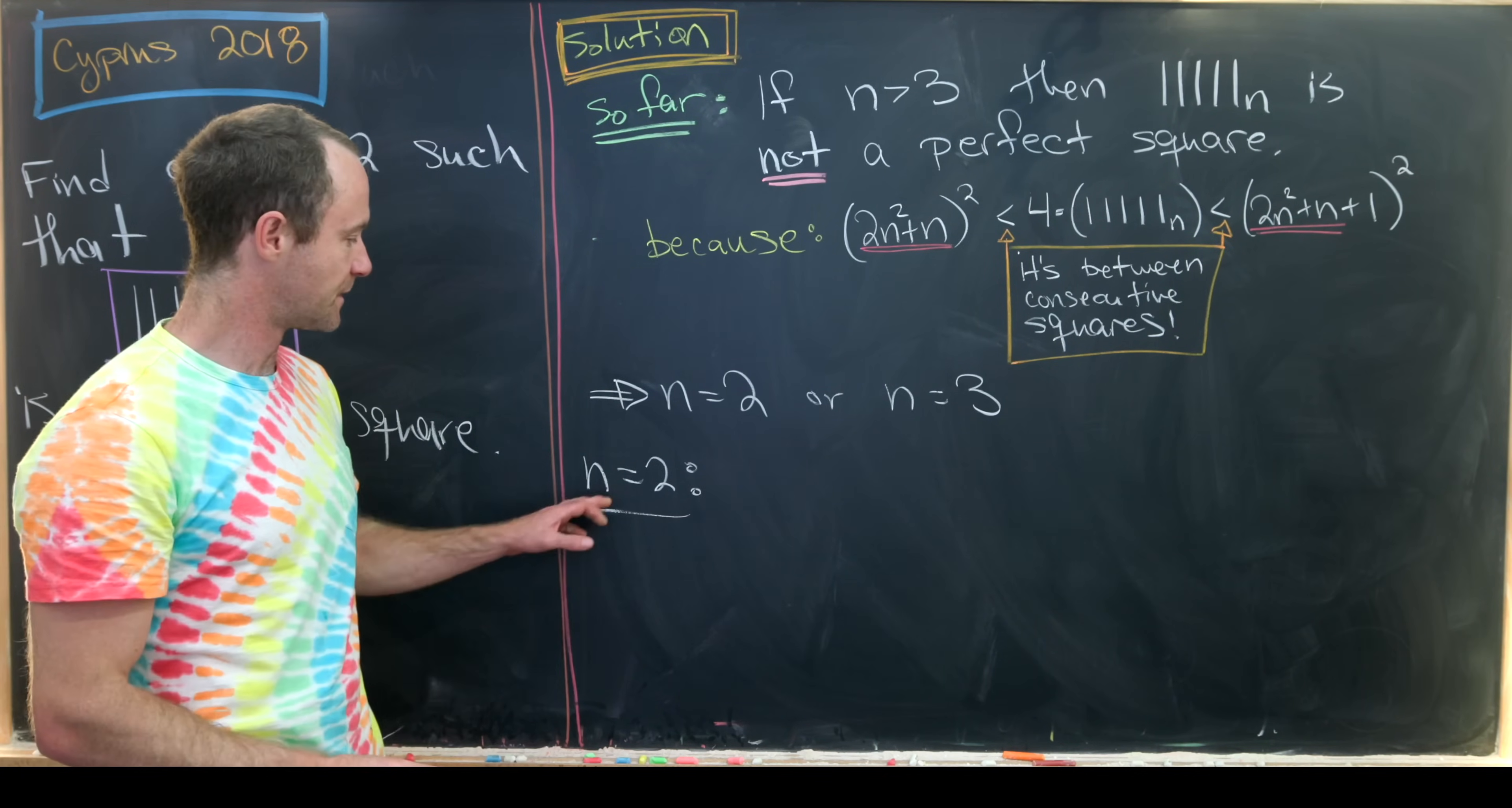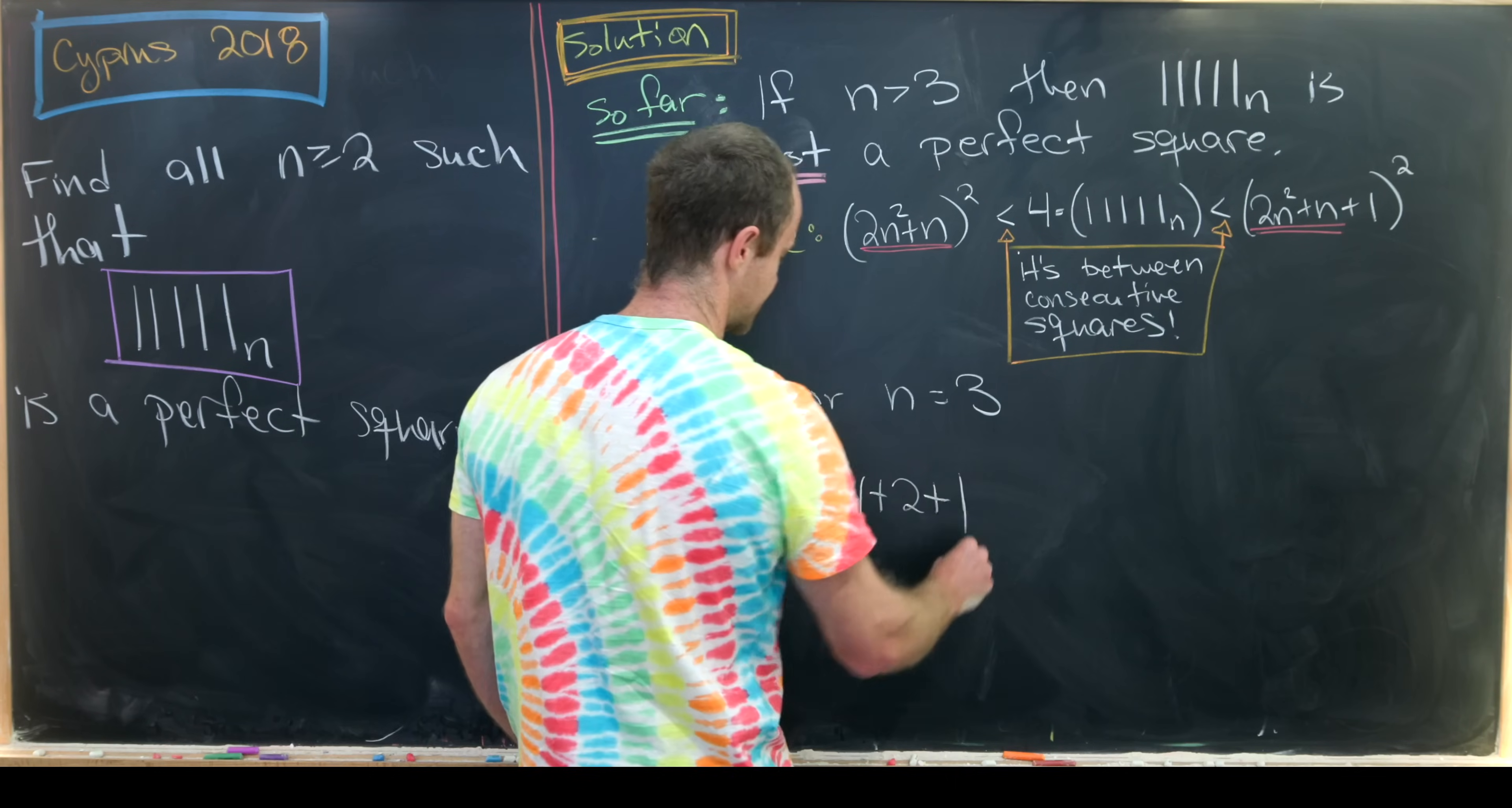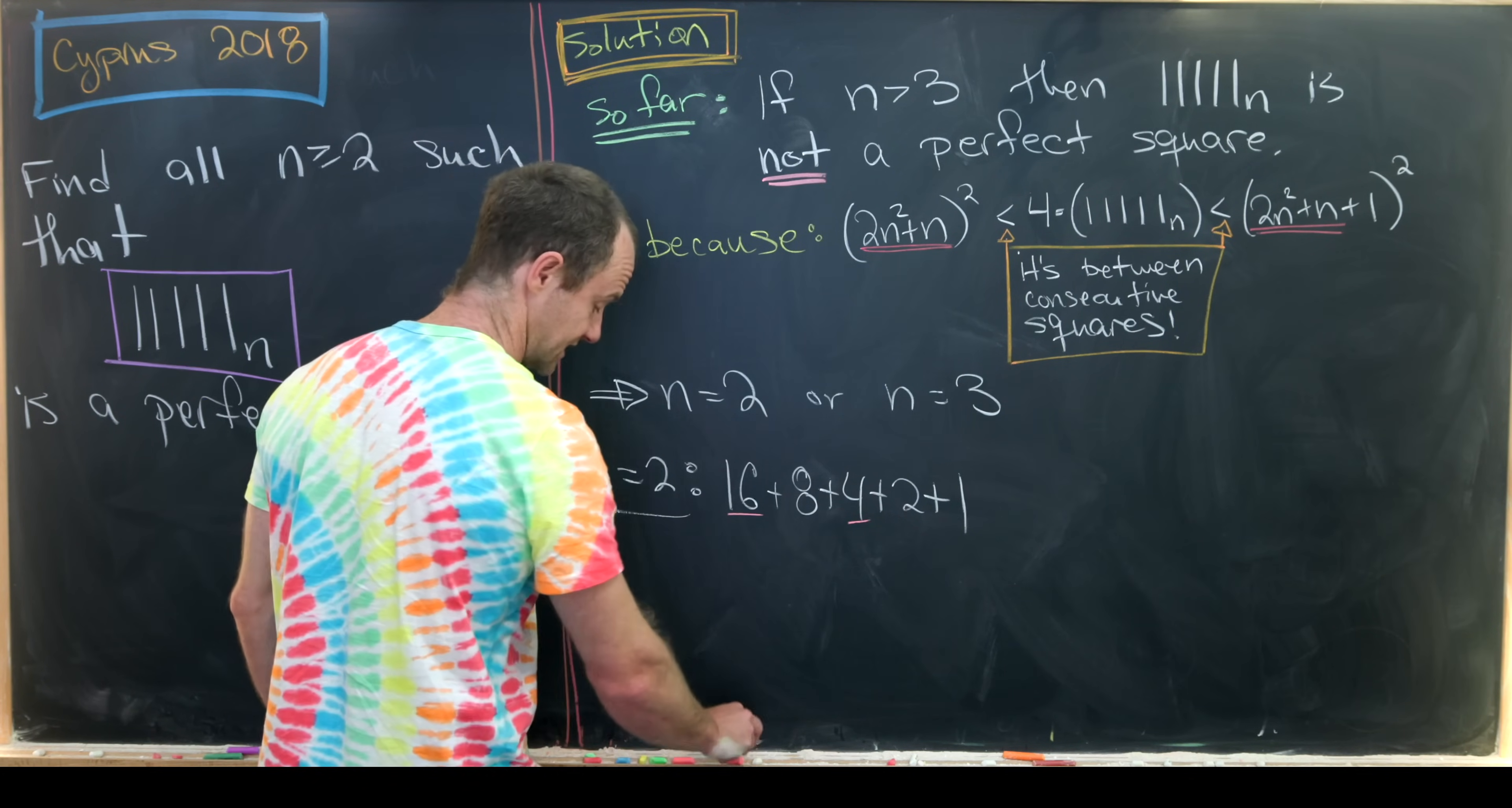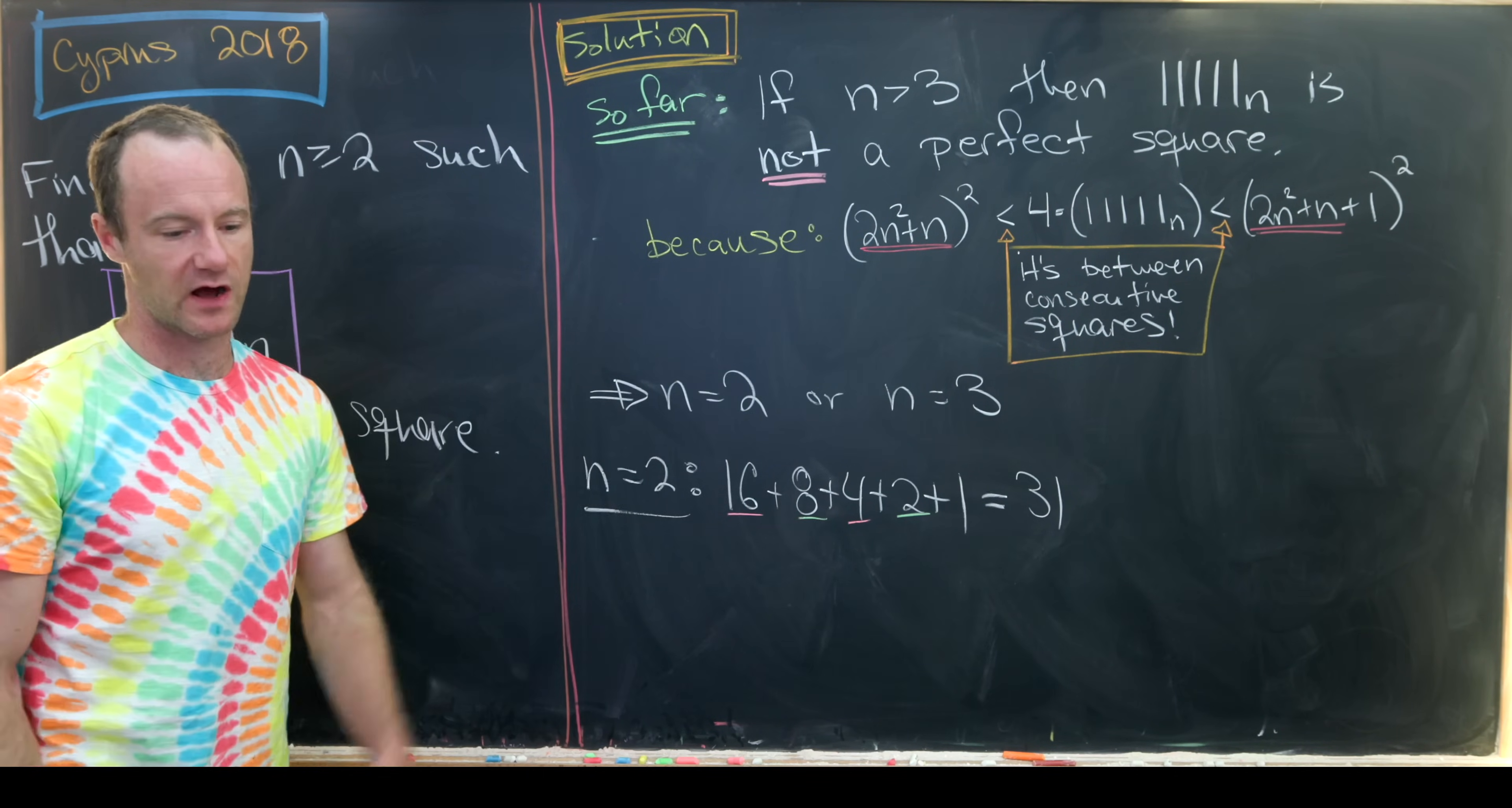So for n equals 2, we'll get 2 to the 4th, which is 16, plus 2 cubed, which is 8, plus 2 squared, which is 4, plus 2, plus 1. But let's see, if you add that up, we get 16 plus 4 is 20, and then 8 plus 2 is 10. That gives us 30 plus 1 is 31. 31 is prime, so that's clearly not a perfect square.